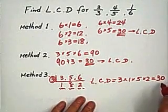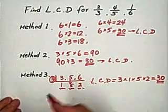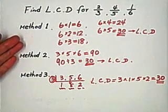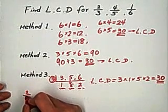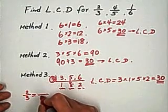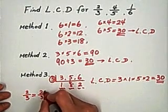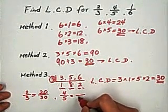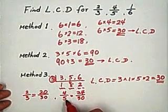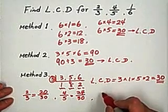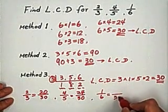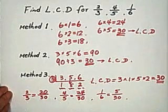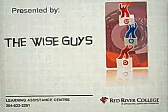After finding the common denominator, convert each fraction to an equivalent fraction. This step is the same whichever method you use. So 2 thirds becomes 20 over 30, 4 fifths becomes 24 over 30 (multiply top and bottom by 6), and 1 sixth becomes 5 over 30 (multiply top and bottom by 5). This is presented by Wise Guys.